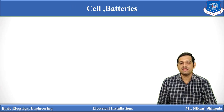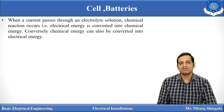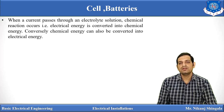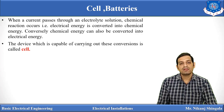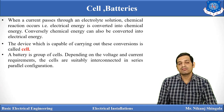Let us start with cells and battery. So what is basically a cell? When a current is passed through an electrolyte solution, a chemical reaction takes place inside it. Chemical energy is converted into electrical energy and electrical energy is converted into chemical energy. The device capable of doing this conversion is nothing but the cell. Now, a cell produces very less amount of EMF, so a number of cells are connected together to form a battery. A battery is a group of cells.